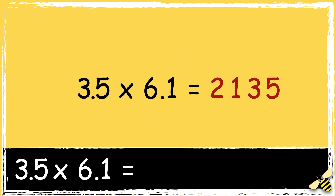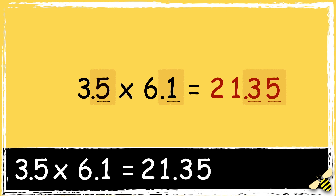We need to place the decimal point in the answer. To do this, we count the number of decimal places in the factors. 3.5 has one digit after the decimal point, and 6.1 has one digit after the decimal point. Altogether, there are two digits after the decimal point in the factors. So we need to ensure that there are two digits after the decimal point in our answer. So the answer is 21.35.